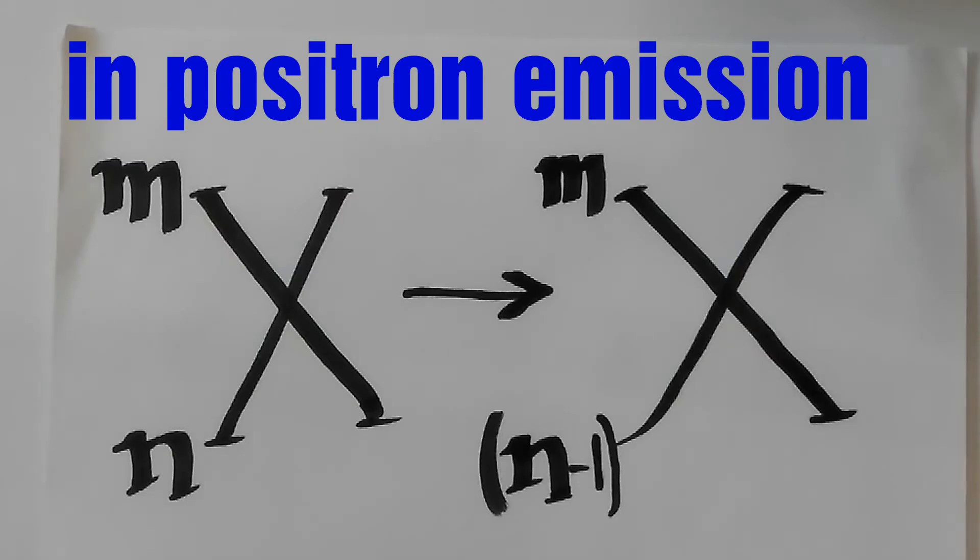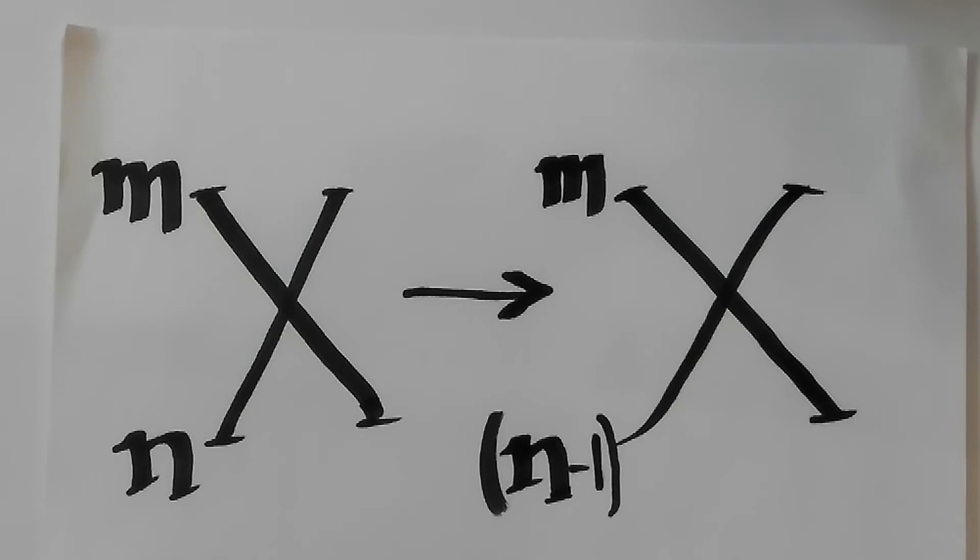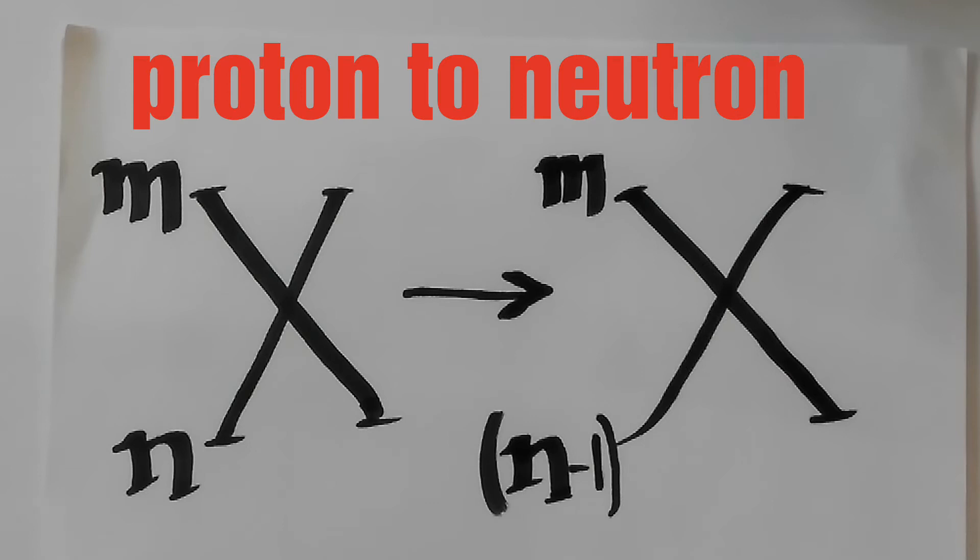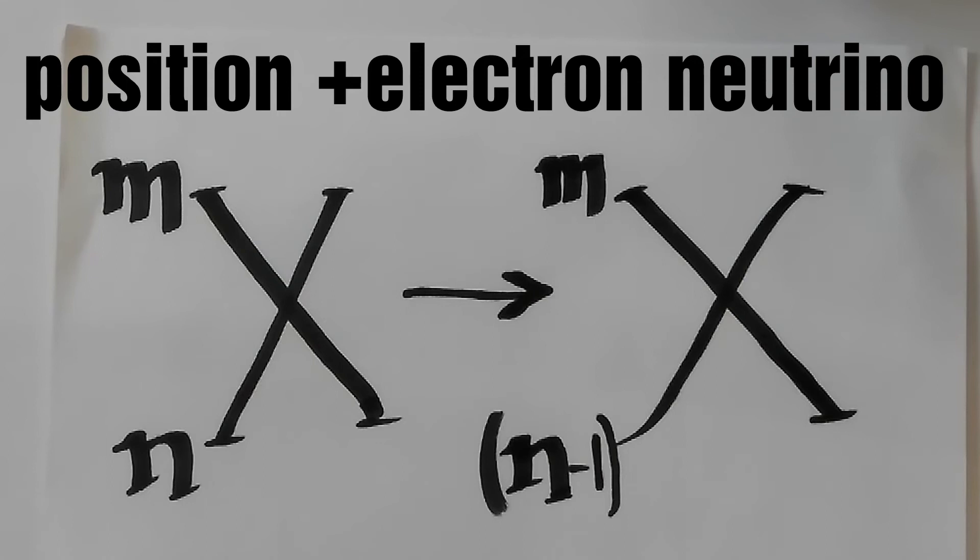Points to remember: During positron emission, there is transformation of a proton to a neutron. This positron is ejected from the nucleus together with an electron neutrino.